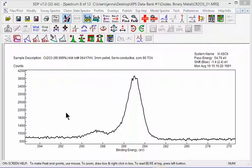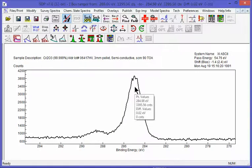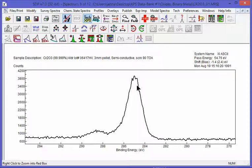We have a chemical state spectrum. It has already been charge shift corrected to approximately 285. You could choose 284.8 or 284.6, depending on what your reference data is telling you.